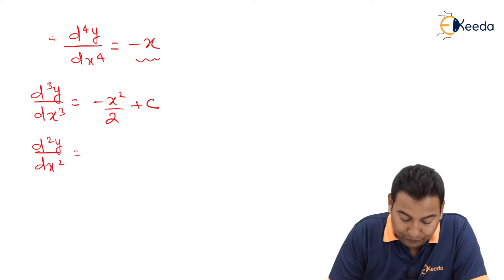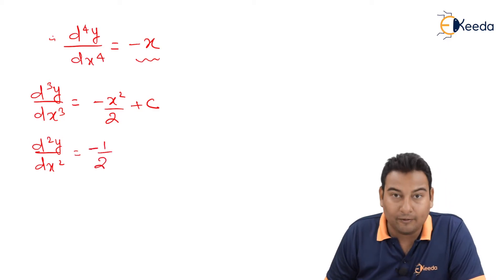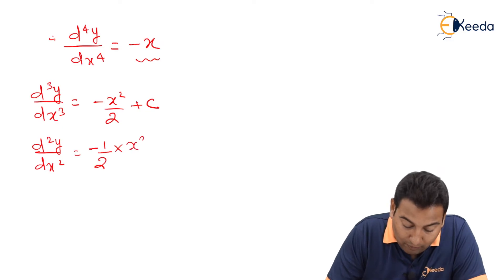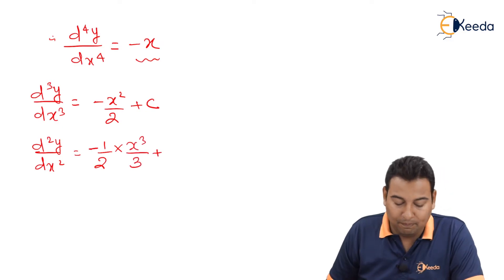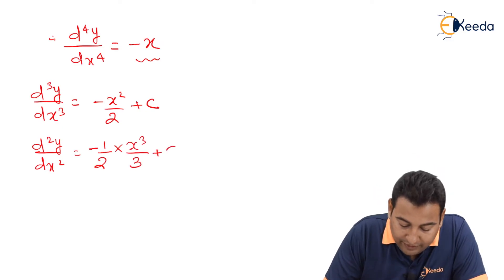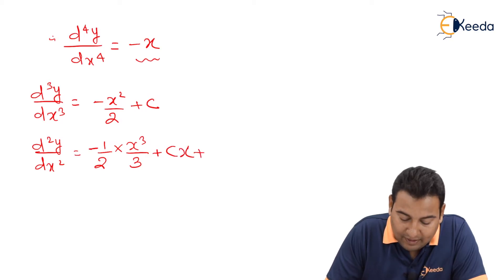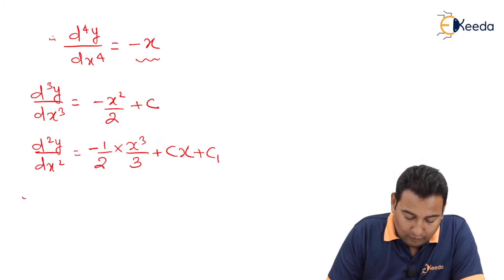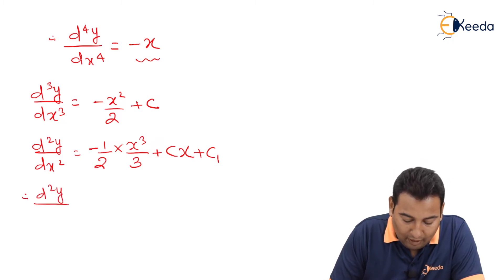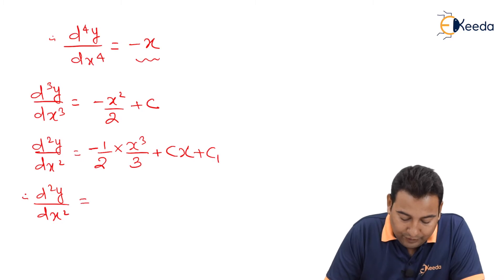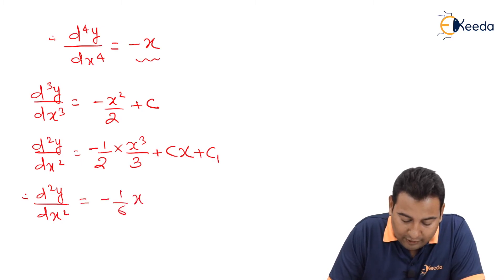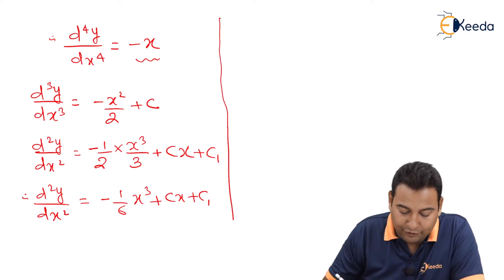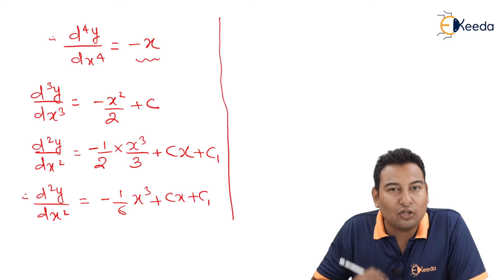One more integration with respect to x - I'll be left with two derivatives. Integrating minus x²/2: minus half is constant, x² integrates to x³/3, plus C integrates to Cx, plus one constant of integration C1. Therefore d²y/dx² equals minus x³/6 plus Cx plus C1.